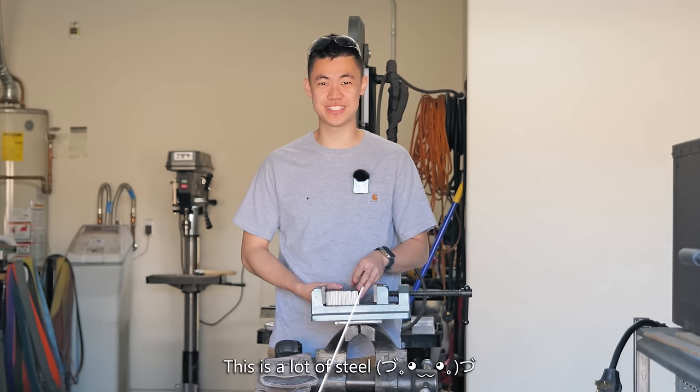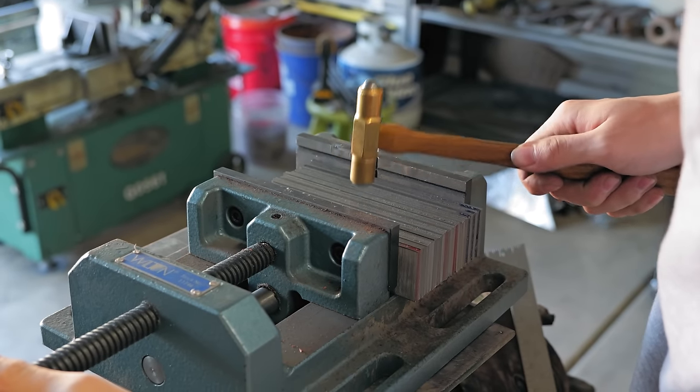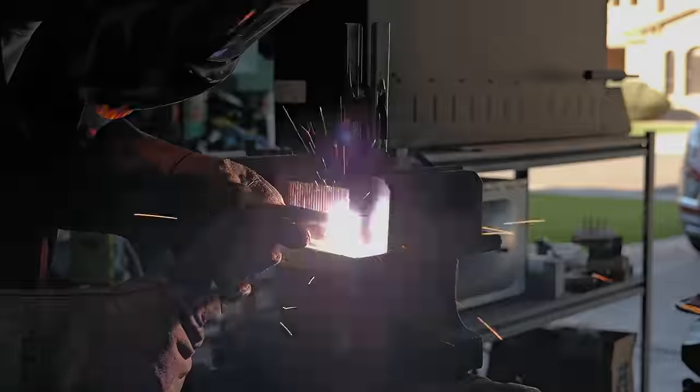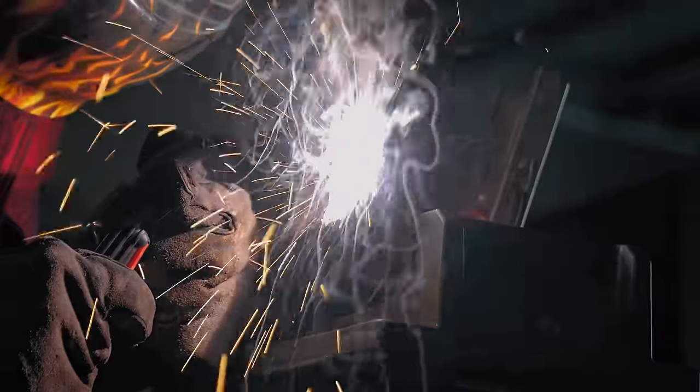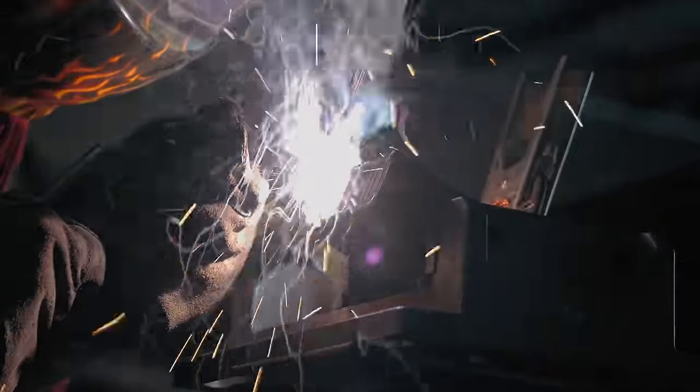This is a lot of steel. My starting billet was essentially just alternating layers of 1084 and 15n20. I had a little bit of extra 15n20 lying around, so I actually had 14 layers of 15n20 and only 11 layers of 1084.